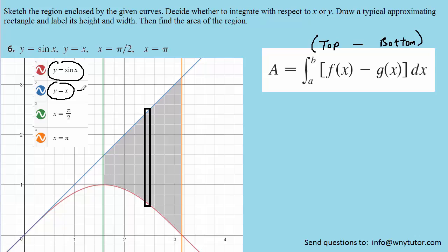So we know that y equals x will be the top function, and then y equals sine of x will be the bottom. So when we set up our area expression, we can integrate the top function, which is x, and then subtract the bottom function, which is sine of x, and we're going to be integrating with respect to x.